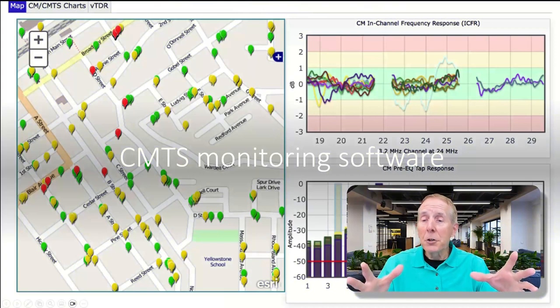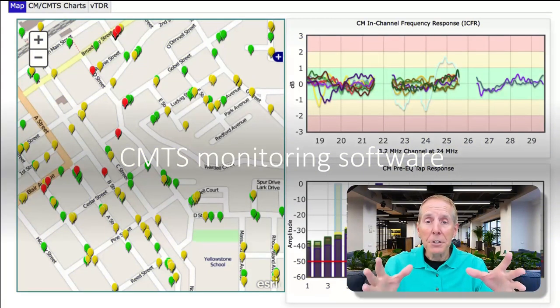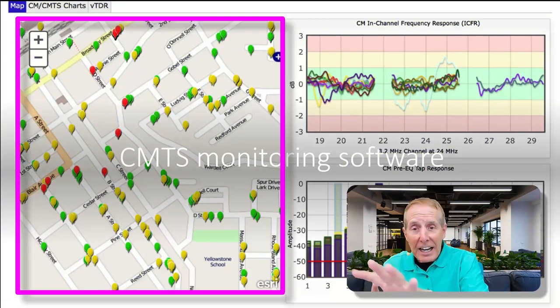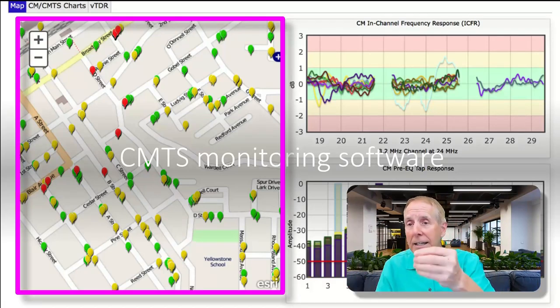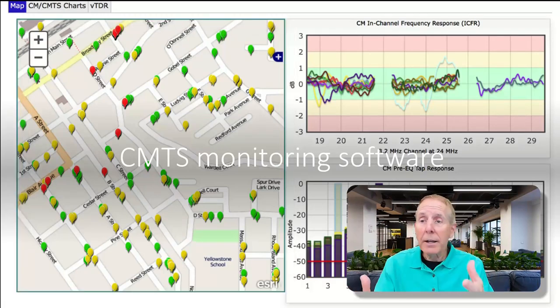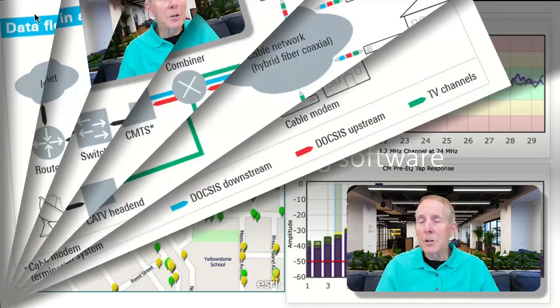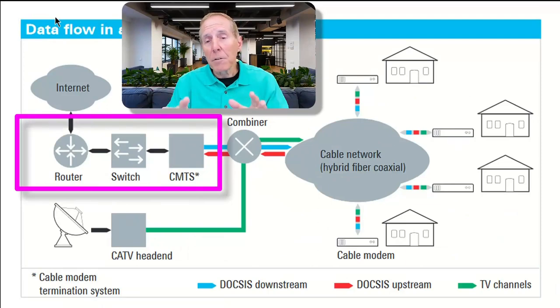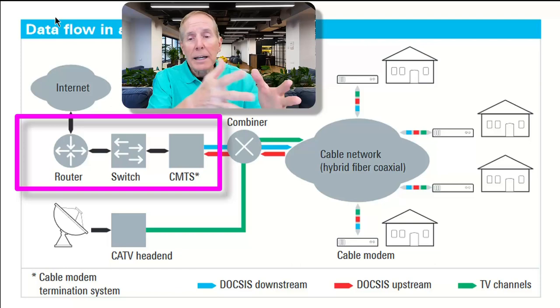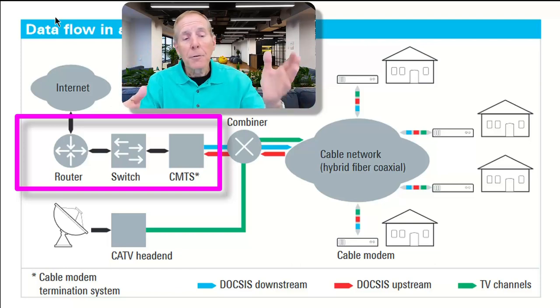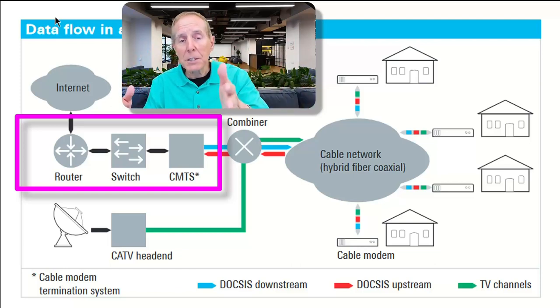Here's a view of CMTS monitoring software. You can see it can actually lay out all the cable modems on a map and indicates with a red, yellow, or green indicator the health of your modem. Here's another great view of data flow in a cable network. We see the internet from an internet connection point into the cable provider, through a router, through a switch, into CMTS, and then we're going to combine that video feed through a combiner and send it out to cable modems through this hybrid fiber coax system.